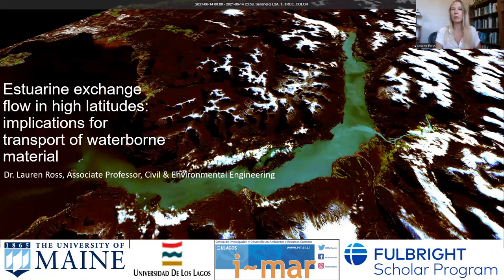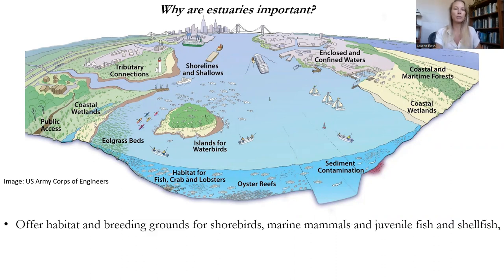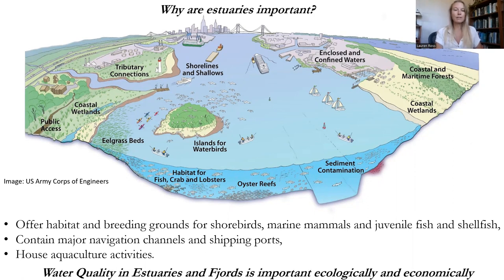Let's talk about why estuaries are important. Estuaries and fjord systems are important areas. I love this simple cartoon diagram of an estuarine system developed by the U.S. Army Corps of Engineers — you can really see many of the different types of activities that happen within estuaries. One important example is that they offer habitat and breeding grounds for shorebirds, marine mammals, and juvenile fish and shellfish. Estuaries contain major navigation channels and shipping ports, important for the large human population on shorelines — about 40% of the U.S. population lives on a coastline. Estuaries and fjords also house aquaculture activities, making these systems really important both ecologically and economically.